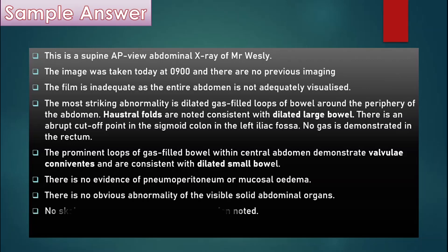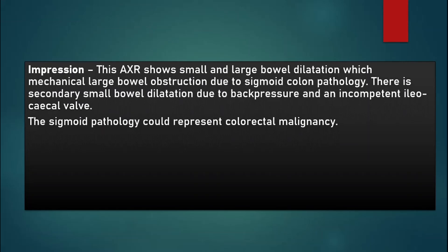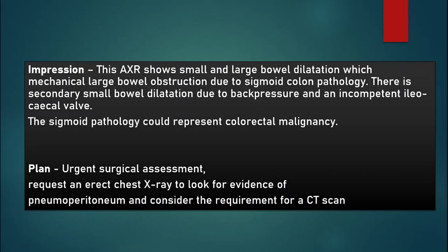There is no obvious abnormality of the visible solid abdominal organs and no skeletal abnormality or calcification noted. Impression: This is a small and large bowel dilation, likely due to sigmoid colon pathology causing mechanical large bowel obstruction with secondary small bowel dilation from back pressure via an incompetent ileocecal valve. The sigmoid pathology could represent colorectal malignancy. Plan: urgent surgical assessment, request an erect chest X-ray to look for air under the diaphragm indicating pneumoperitoneum, and consider a CT scan.